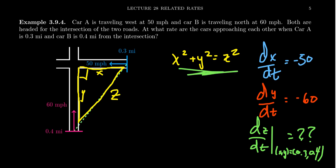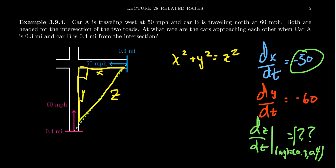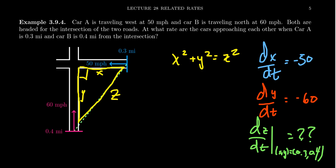This is where the Pythagorean equation comes into play. Unlike a previous video where we had three variables but only one known derivative and had to remove a variable by substitution, here we know two derivatives and only need to find the third. So there's no need to remove any variables. We proceed to take the derivative with respect to time on both sides of x² + y² = z².